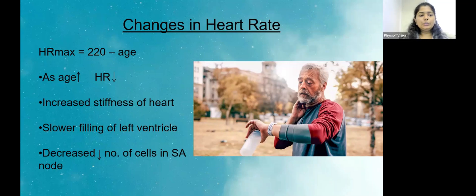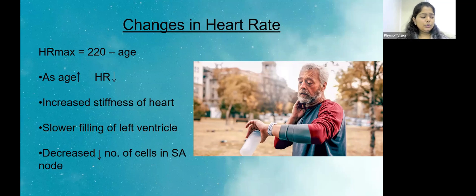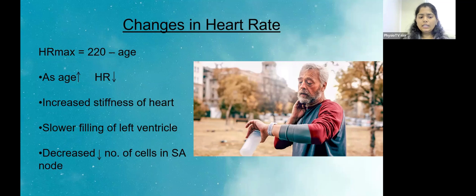Changes in heart rate: HR max is calculated by 220 minus age, so as age increases, HR max decreases. The factors contributing to reduced heart rate are increased stiffness of the heart with slower filling of the left ventricle, and decreased number of cells in the SA node. Since the SA node is the pacemaker, the reduced impulses from it eventually reduce the heart rate.